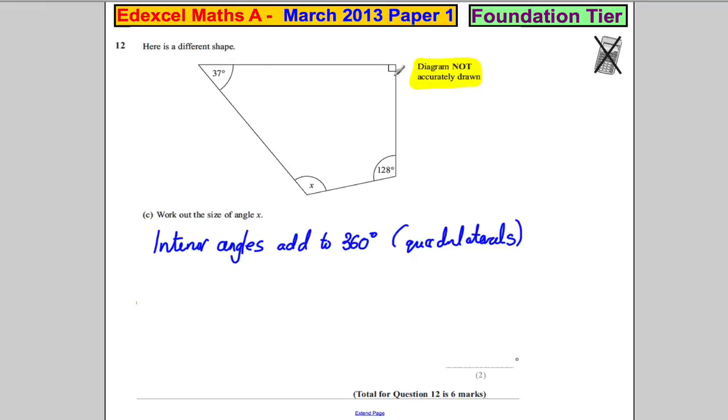Now you also know that this sign here means 90 degrees. So the question is, what is this angle here? What you can do is, you know the angles add up to 360, so there are two ways of doing it. I would prefer writing x plus 37 plus 90 plus 128 must add up to 360 and then finding x.